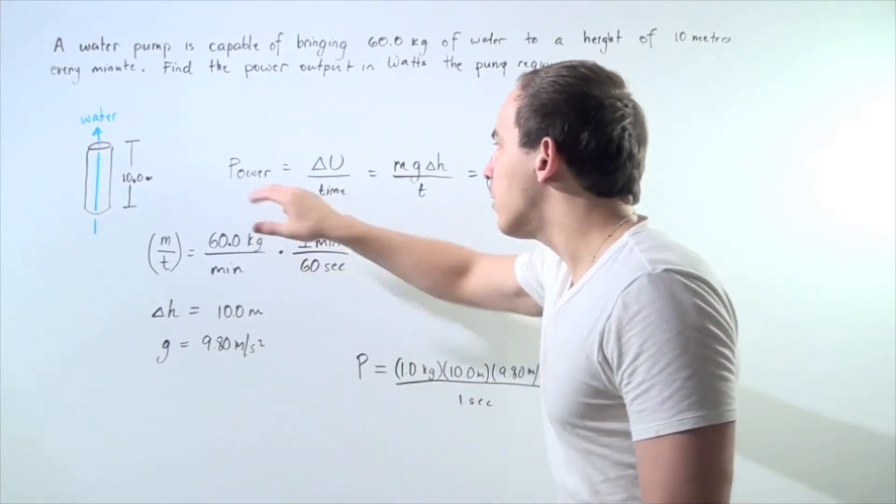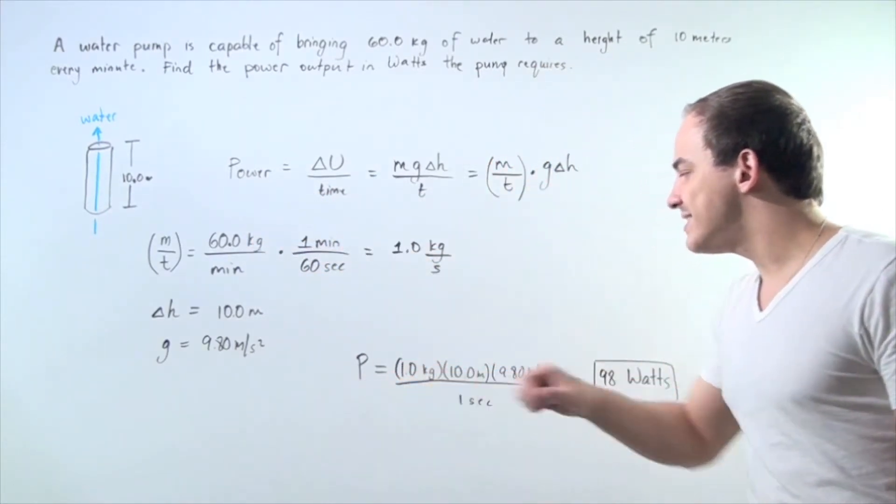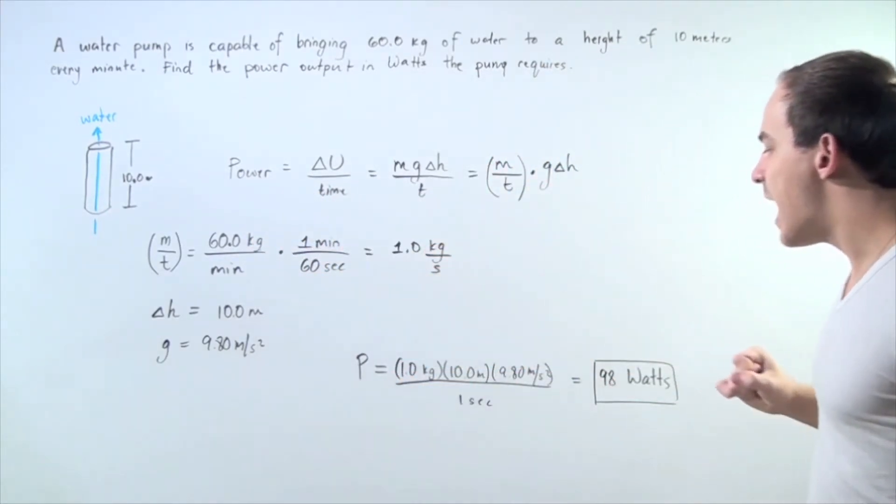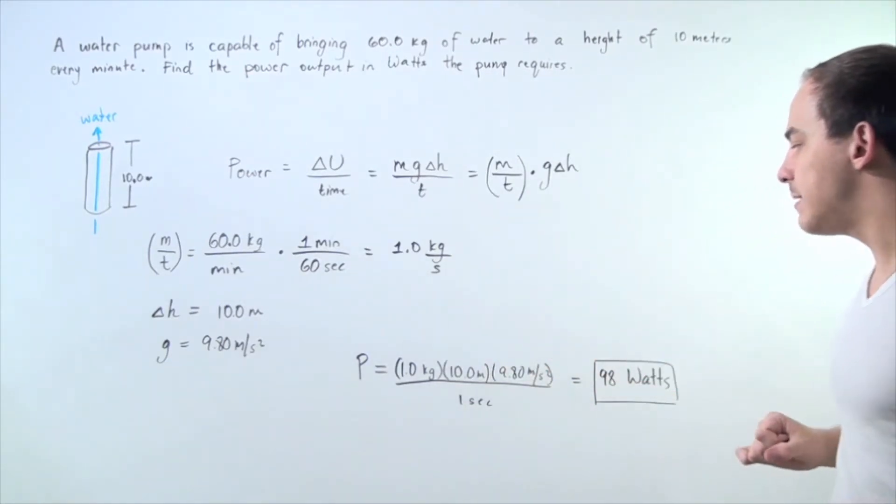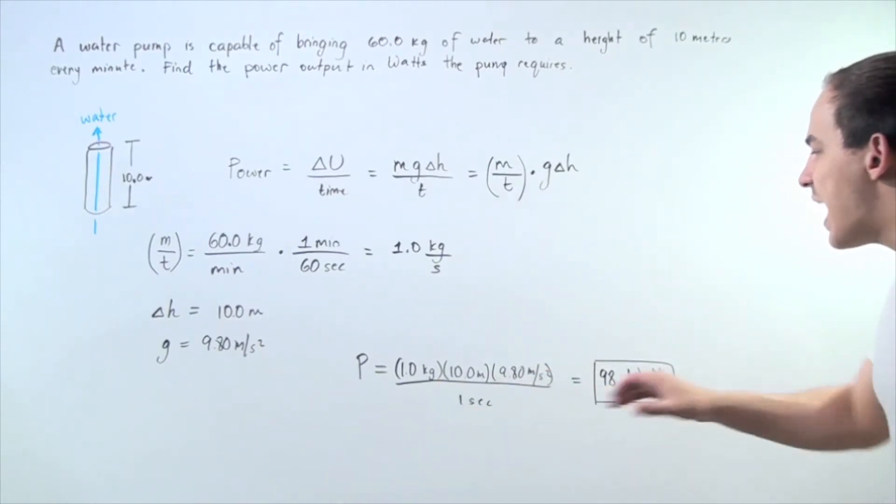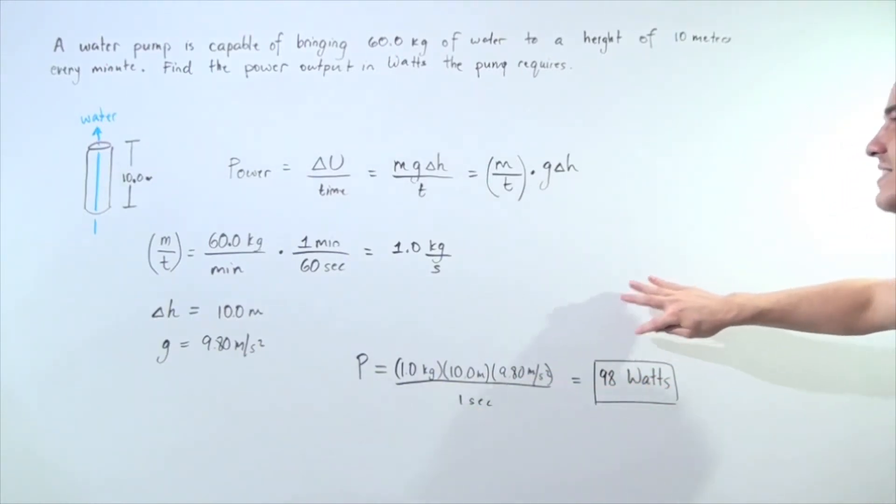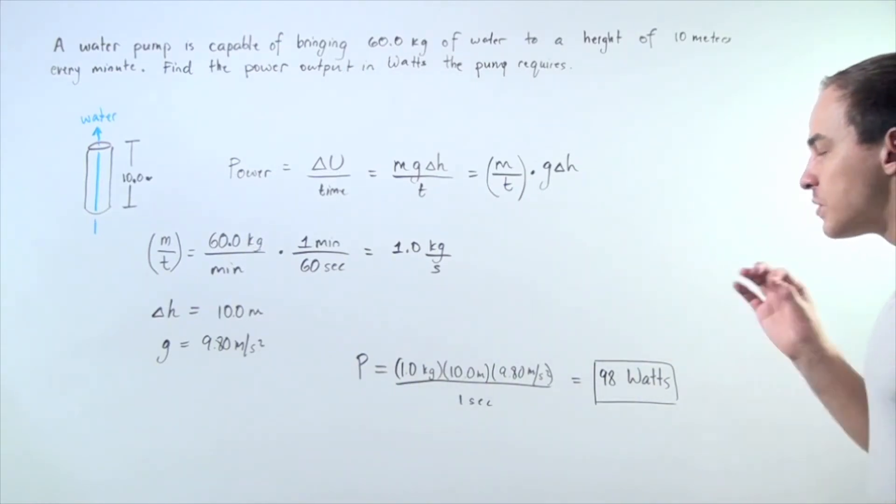Now, we use this power equation. Power is equal to the mass times the gravitational constant times the change in height 10 meters divided by 1 second and that gives us 98 joules per second, also known as 98 watts.